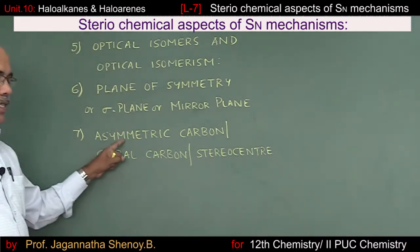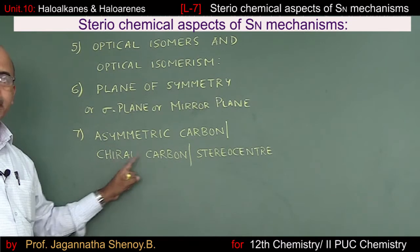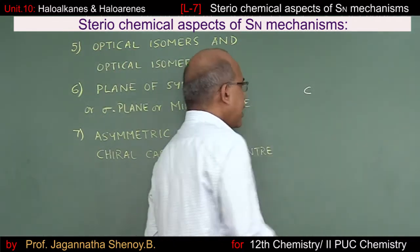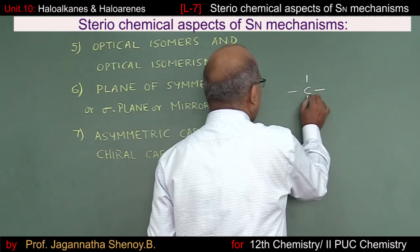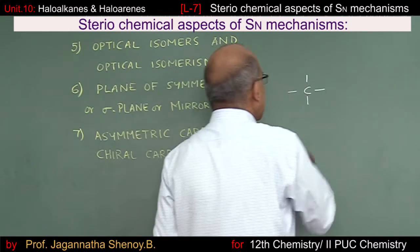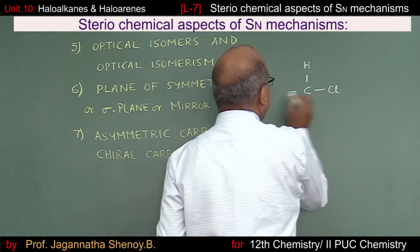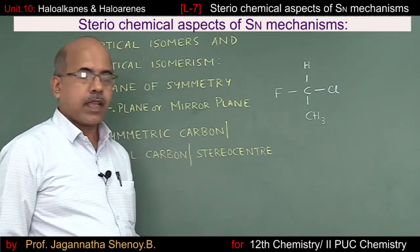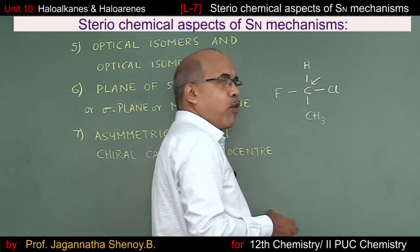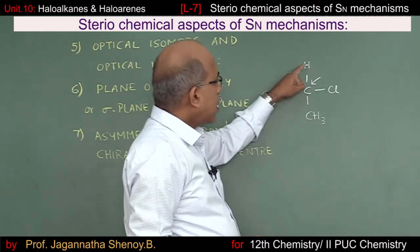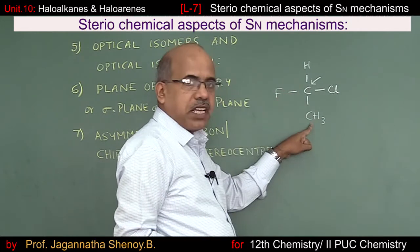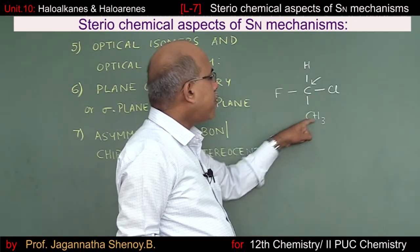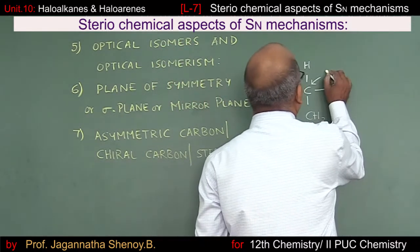The next terminology is asymmetric carbon, also called chiral carbon or stereocenter. Consider a carbon atom with four valencies satisfied by four different groups: a hydrogen atom, a chlorine atom, a fluorine atom, and a methyl group — all different. Such a carbon atom connected to four different substituents is termed an asymmetric carbon atom.